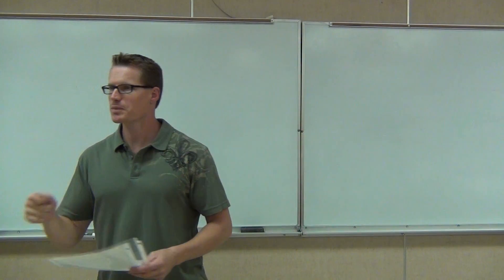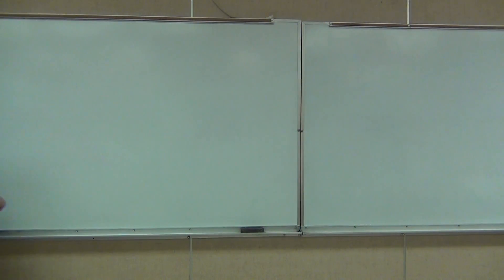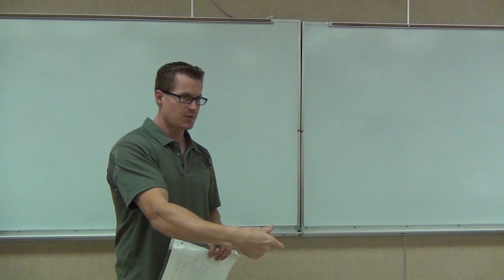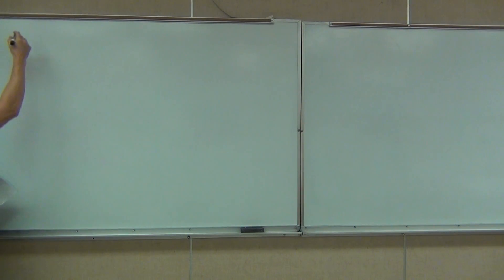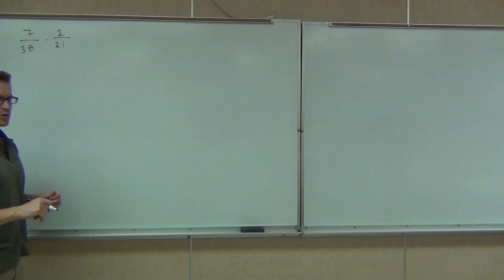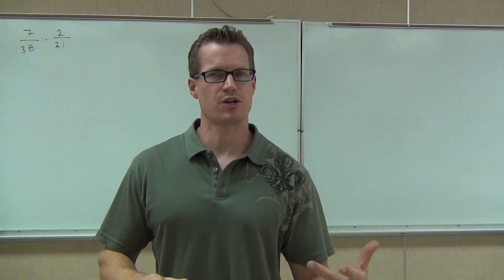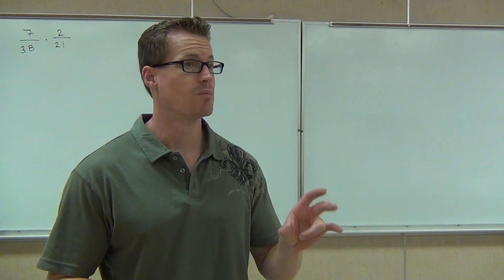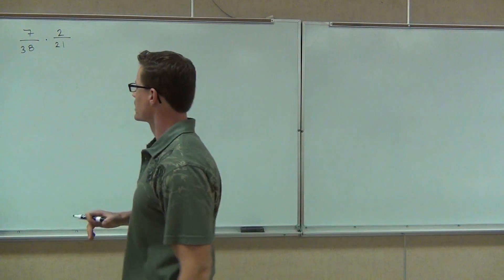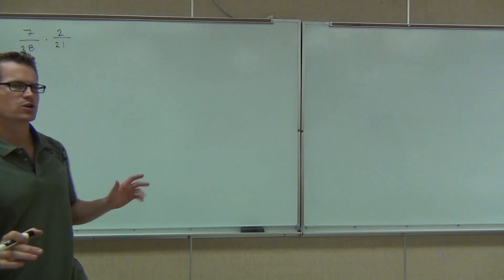We're continuing on with some multiplication and division of fractions. What we learned last time is that if we have some fractions, we can certainly multiply them. We have really two to three options to multiply — we multiply fractions straight across, but we really want to continue to simplify as we multiply. Do you need a common denominator to multiply fractions? The answer is no, and we're not going to need it for division. However, when we get into addition and subtraction, we will need one.